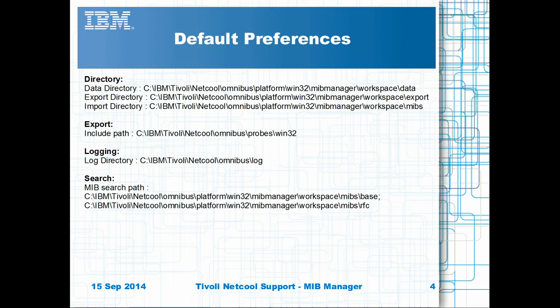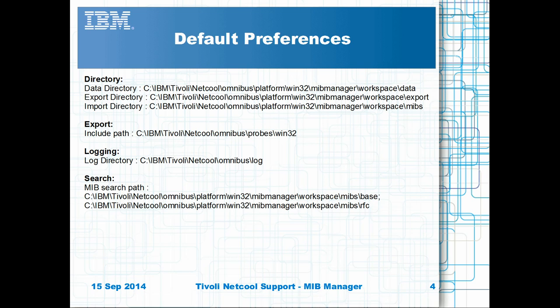By default, the MIB Manager uses its installation directory to import and export files. The settings include a data directory, an export directory, an import directory, an include directory, and a log directory, as well as search directories. MIB files should be provided with the hardware.